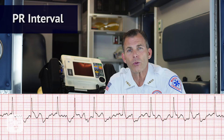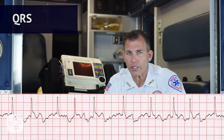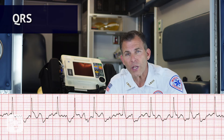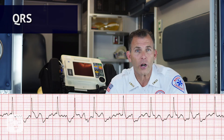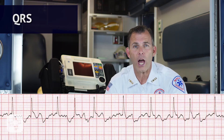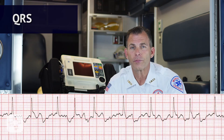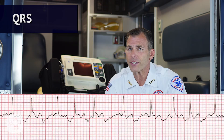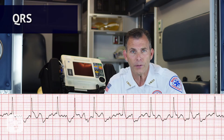Next we move on to the QRS complex of the ECG. Is the QRS interval less than 0.12 seconds? Yes — the QRS is within normal range. Is the QRS wide or narrow? In this case, the QRS is narrow. Are the QRS complexes similar in appearance? Here we can see that each one does look similar.